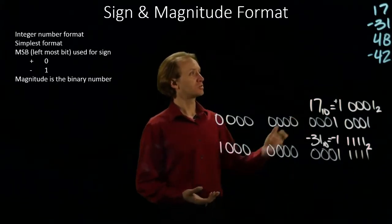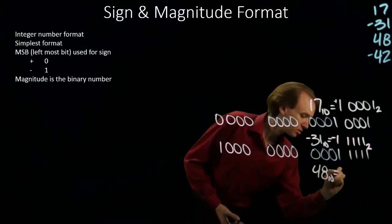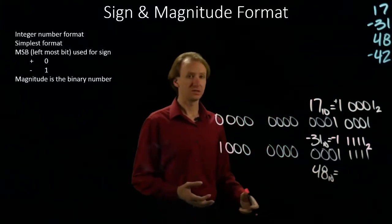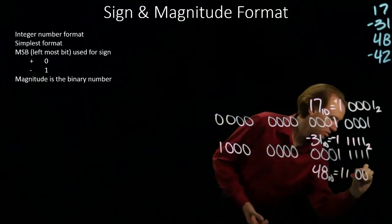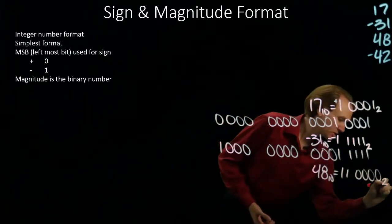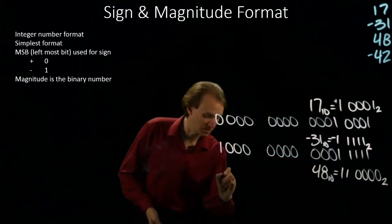The next number is 48. 48 is 32 plus 16, so I will turn on both of those bits and leave all of the others off. This is a positive number, so my sign bit is a 0.